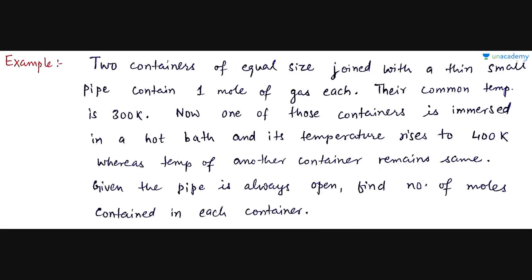Next question is, we have two containers of equal size, and both are joined by one thin small pipe like the previous question itself, but both containers' size in this case is equal. In both there was one mole of gas filled, both had common temperature of 300 Kelvin initially, meaning everything in both was exactly the same. Now, what we did is we immersed one container in a hot bath, and because of that, its temperature went from 300 Kelvin to 400 Kelvin, but the other gas's temperature remains at 300. Now, it's given that the pipe is always open, meaning gases can easily exchange with each other between cylinders. So, we have to tell that when one's temperature changed and the other's didn't, then how many total moles will be in both gases, they won't remain same, right? They will change.